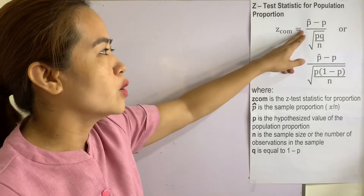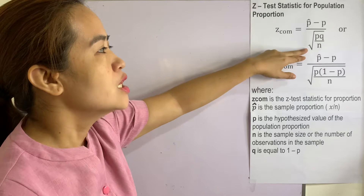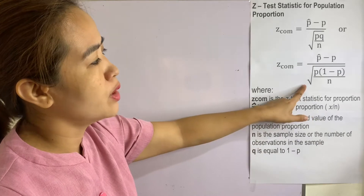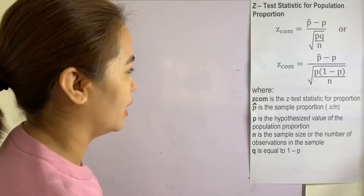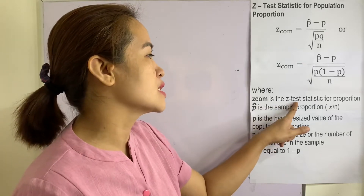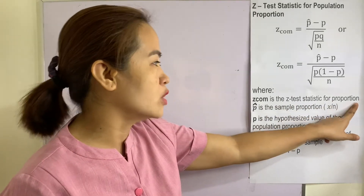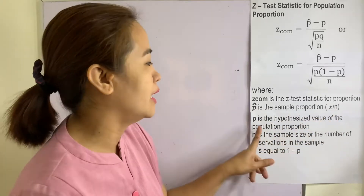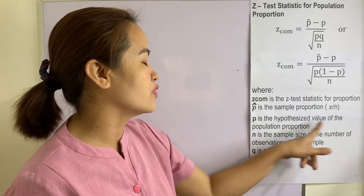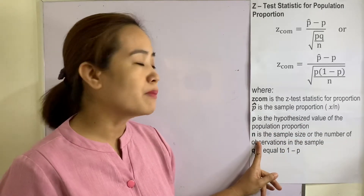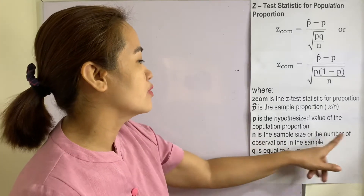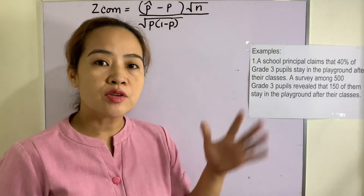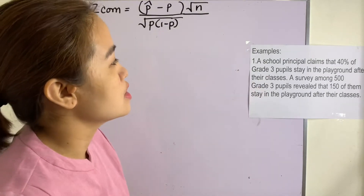The z-test statistic for population proportion uses the formula: z_com equals p-hat minus p, divided by the square root of pq divided by n, or equivalently, p-hat minus p divided by the square root of p times (1 minus p) divided by n. Here, p-hat is the sample proportion equal to x divided by n, p is the hypothesized value of the population proportion, n is the sample size, and q equals 1 minus p.